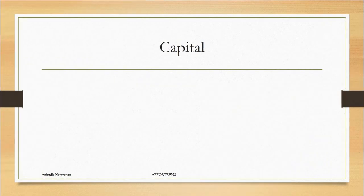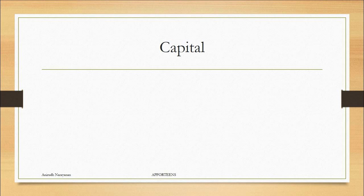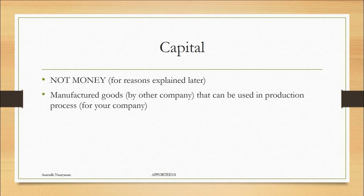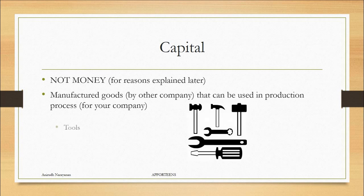Capital is kind of different than what you're thinking of. It's not money and we're going to get into that shortly. But it's not money. You have to make sure you remember that. Capital refers to the manufactured goods by other companies or by your company that can be used in the production process for your company. So things like tools and buildings. These are all examples of capital. Machines as well.